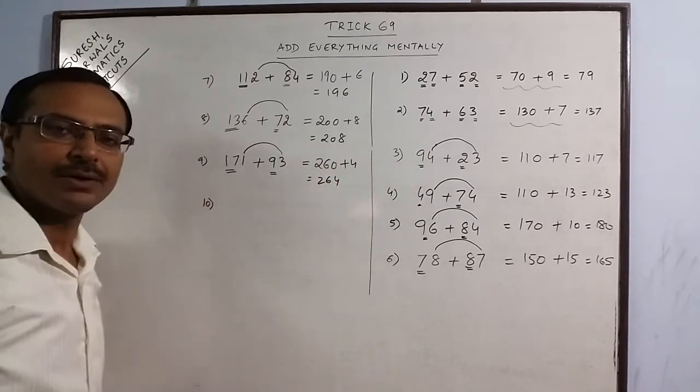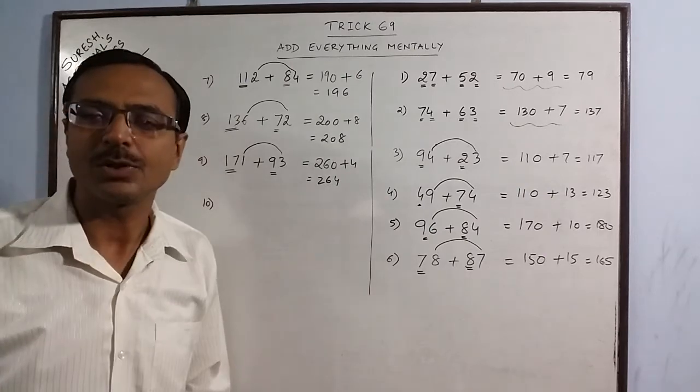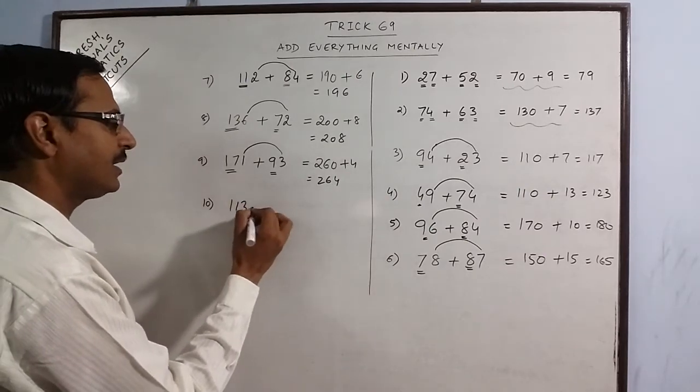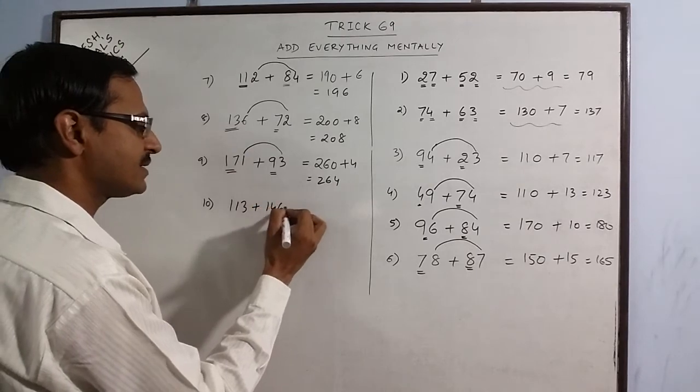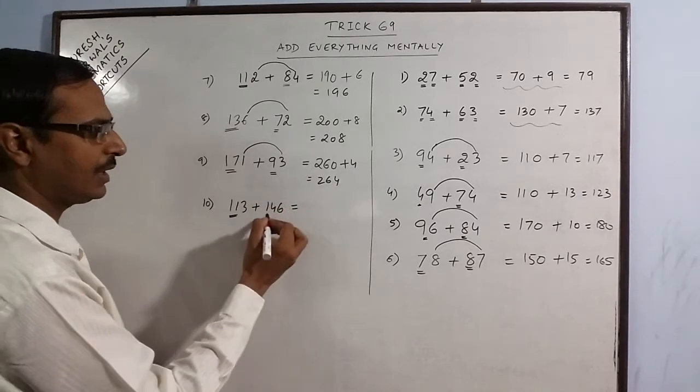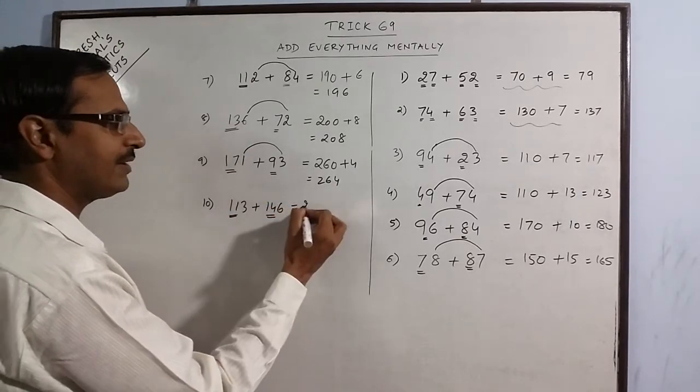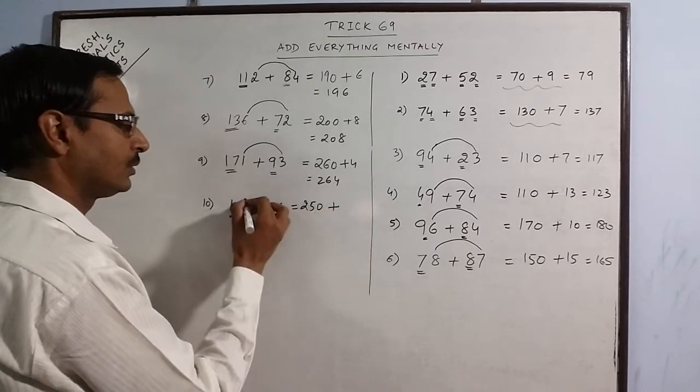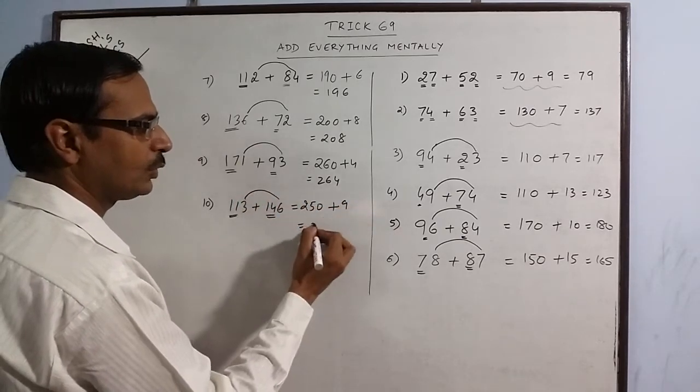You can add both 3 digit numbers also. Say, we have 113 plus 146. Now see, 11 and 14. 25. Put 1 0. 3 plus 6 is 9. 259.